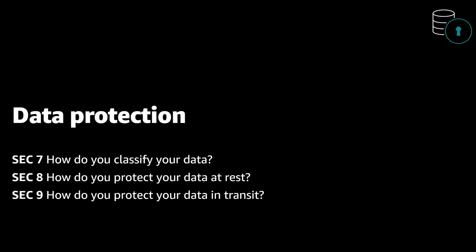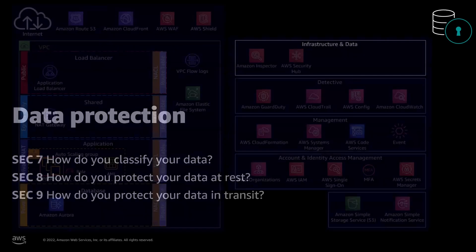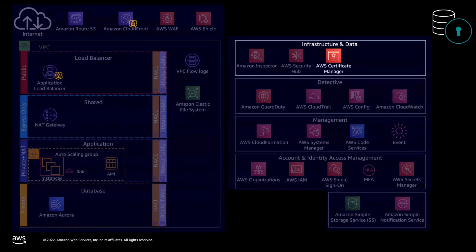Let's move on to data protection. An AWS customer has full control over their data. AWS makes it easy to encrypt your data and manage keys, which can be automated by AWS or maintained by you. In this area of the security pillar, we ensure that data is classified and protected in transit and at rest. Taking the same architecture as an example, our workload has CloudFront and an application load balancer. The team uses AWS Certificate Manager or ACM to enable encryption of data in transit — a service that lets you easily provision, manage, and deploy certificates for use with AWS services.